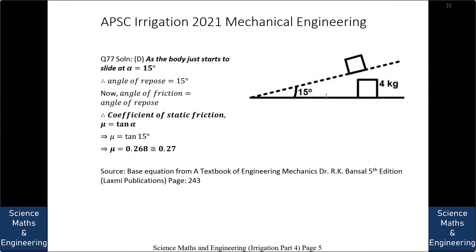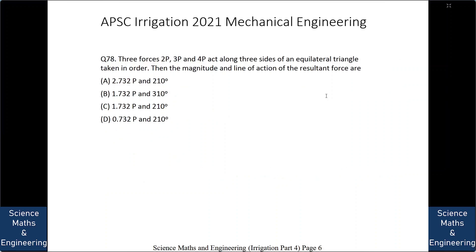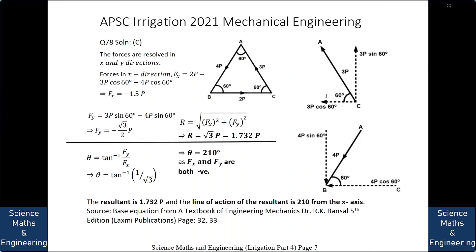Three forces 2P, 3P, and 4P act along three sides of an equilateral triangle taken in order. The magnitude and line of action of the resultant force are: A. 2.732P and 210°, B. 1.732P and 310°, C. 1.732P and 210°, or D. 0.732P and 210°. The answer is C: 1.732P and 210°.